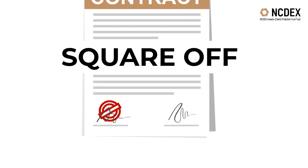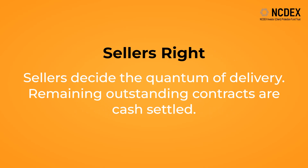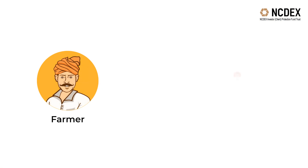There are usually three types of futures contracts. Compulsory delivery: on expiry, sellers must deliver the underlying asset and buyers have to accept delivery and pay. Seller's right: sellers decide the quantum of delivery; remaining outstanding contracts are cash settled. Intention matching: both buyers and sellers individually decide the quantum of delivery; remaining quantities where delivery intentions are not received are cash settled.